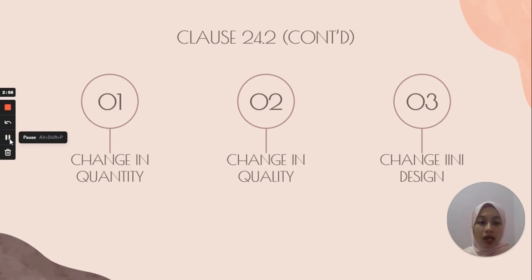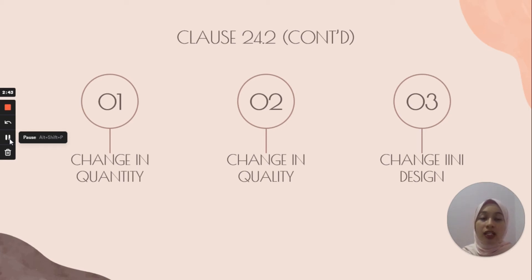Next is the change in design. The change in design includes the omission of works, additional works, substitution works, change in the level, position, dimension of the works, the change in the kind of material used in the works, and the change in the shape and colours of the works.